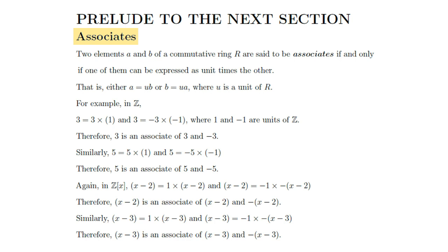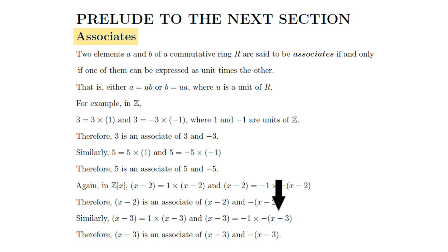Similarly, x minus 3 can be expressed as a product of a unit times x minus 3 and a unit times negative x minus 3. So x minus 3 is an associate of x minus 3 and negative x minus 3.